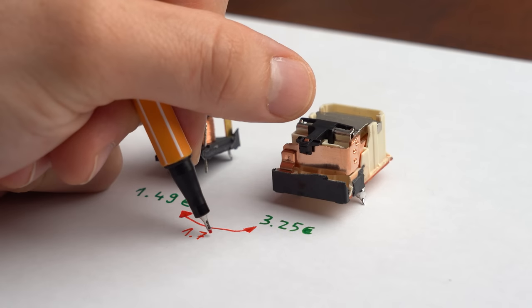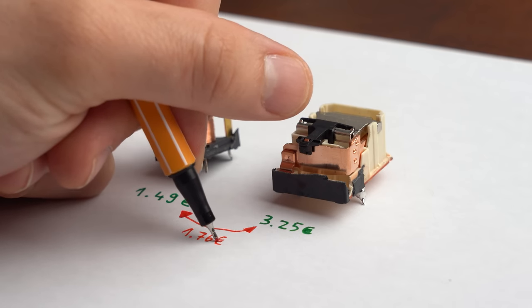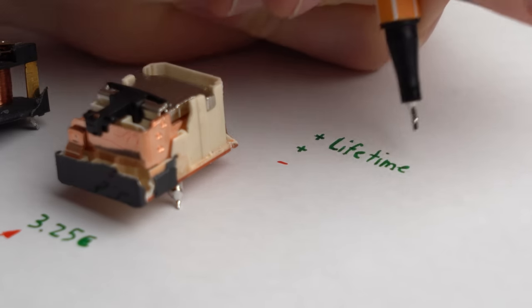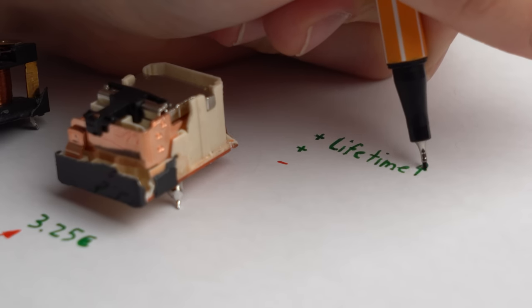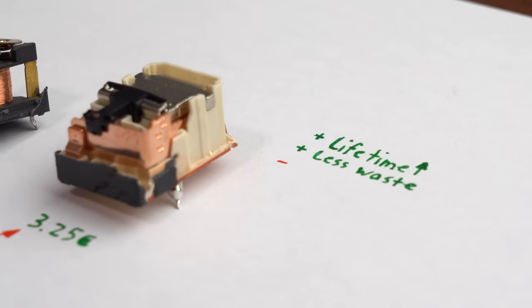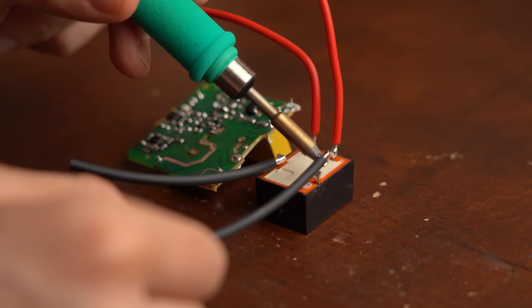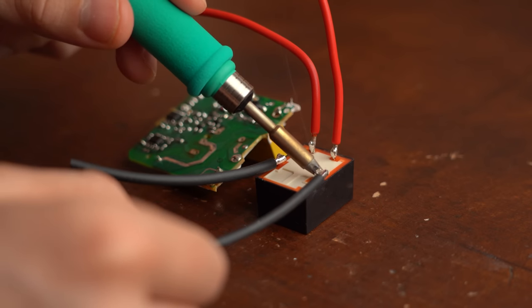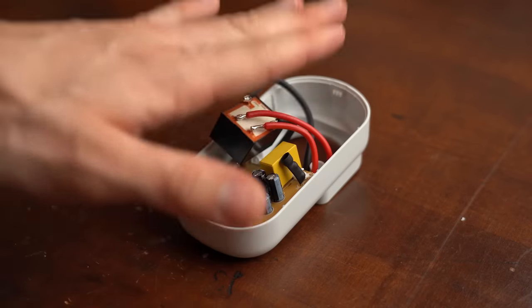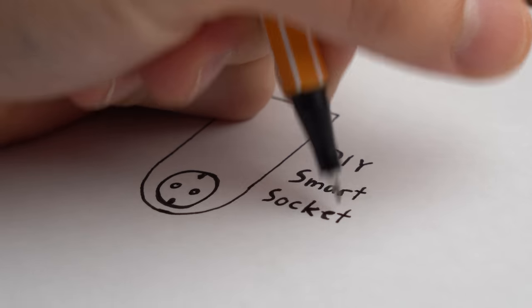And what bothers me the most here is that the high inrush current relay only costs 2 euros more than the general purpose one. Meaning that if they would use such relays from the start they could extend the lifetime of their products and thus produce less electronics waste. But of course that would also reduce their profit. But anyway at this point we could simply replace the relay in the buy socket and be done here. But since that would not be a very safe electronics job I instead decided to make my own smart socket.